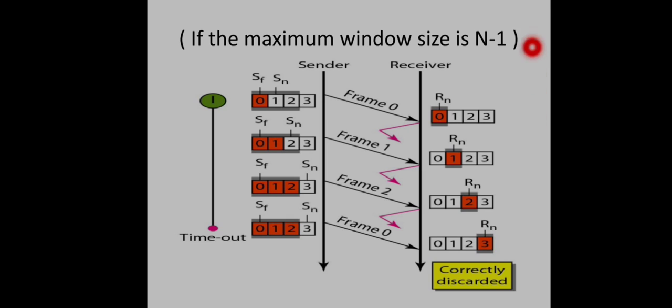The window size should always be 1 less than the maximum range of sequence number values. In the next session we will see the second type of sliding window protocol: Selective Repeat.